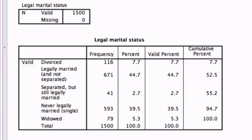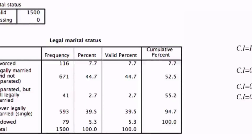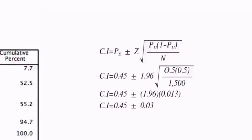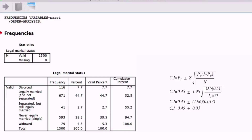In the output screen, a chart of all the legal marital status categories will appear. It will show frequency, percent, valid percent, and cumulative percent. We want to find the proportion of Canadians that are married. We take the percentage of legally married Canadians — which is 44.7% — and input it into the confidence interval equation for proportions. From the equation results, we can estimate that between 42% and 48% of Canadians are married. We now know how to construct confidence intervals for the sample mean, error graph, and confidence interval proportion sample.